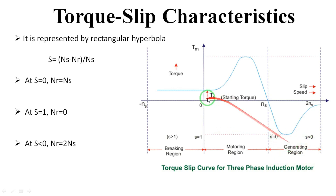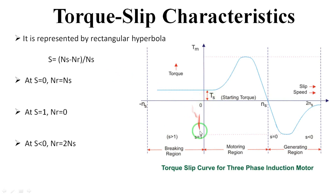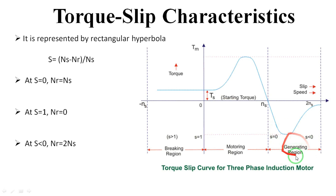So we have three clear conditions. First, the motor starts from zero slip. Second, it reaches synchronous speed — this is the motoring region. Third, if the speed goes beyond synchronous speed, that region is the generating region. If the speed goes below zero — that is, less than zero — it becomes the braking region. So slip greater than one means the braking region, based on the slip value.